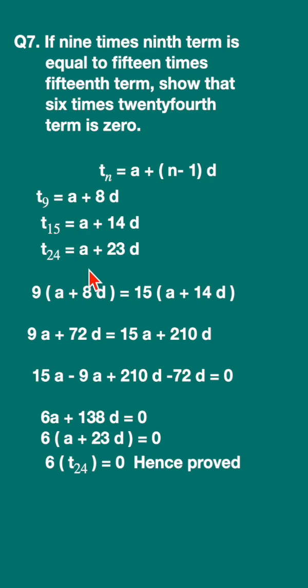Now look at this. a plus 23d is actually t24, the 24th term. Substitute here: 6 times t24 equals 0. And that is what we have to show. Hence proved.